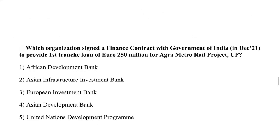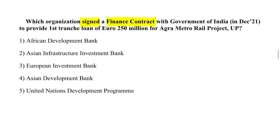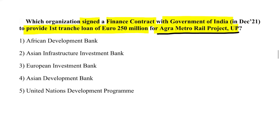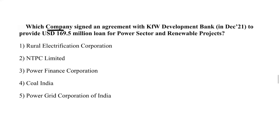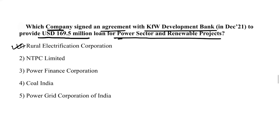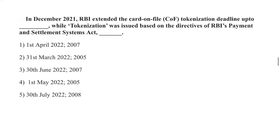The European Investment Bank signed a finance contract with the Government of India to provide the first tranche of a 250 million euro loan for the Agra Metro Rail Project in Uttar Pradesh. Rural Electrification Corporation signed an agreement with KfW Development Bank to provide a 169.5 million US dollar loan for power sector and renewable energy projects.